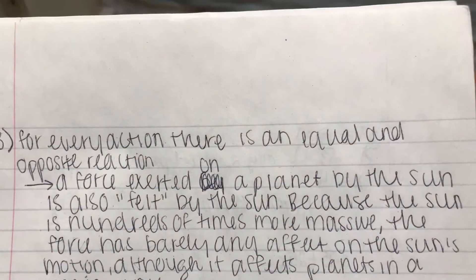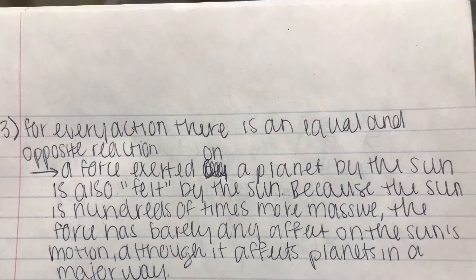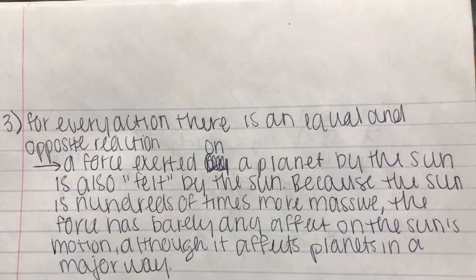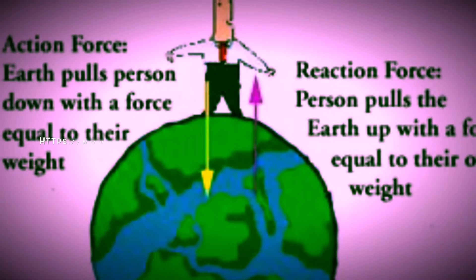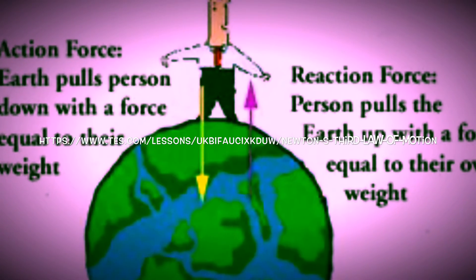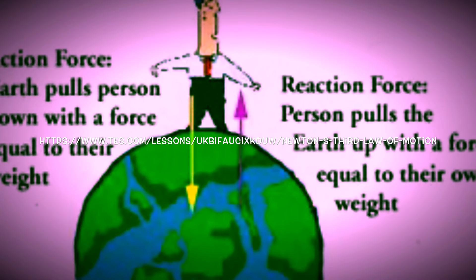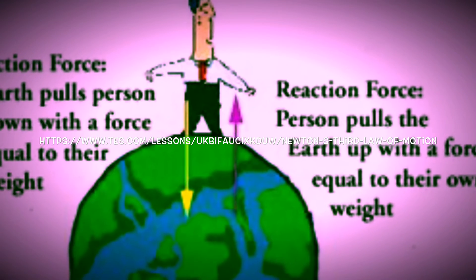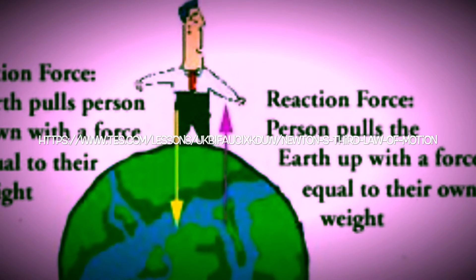A force exerted on a planet by the Sun is also felt by the Sun. Because the Sun is hundreds of times more massive, the force has barely any effect on the Sun's motion, although it affects the planets in a major way.